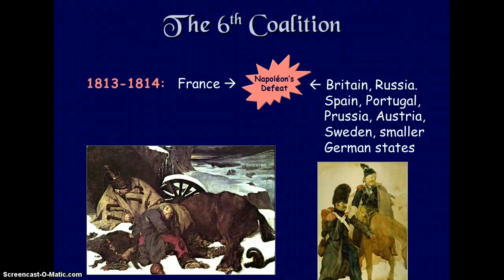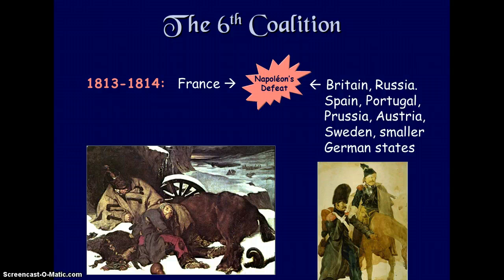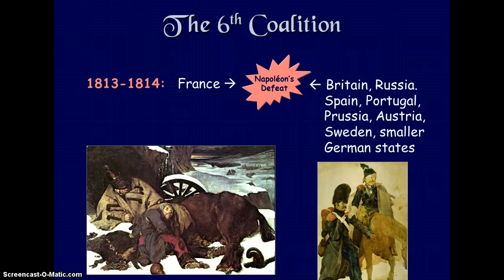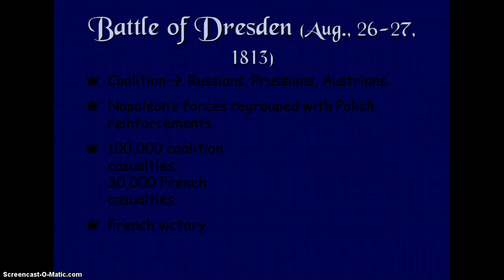In this video I'm going to talk about Napoleon's downfall, starting with the Sixth Coalition. From 1813 to 1814, France was defeated by Britain, Russia, Spain, Portugal, Prussia, Austria, Sweden, and some smaller German states. We can see that once European friends now became European enemies.